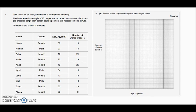It says we've got a guy, Jack, who works as an analyst for Doppel, a smartphone company. He's chosen 10 people from the company and recorded their age, and also how many words they can type into a text message in one minute. The table has all the data for us: names, genders, ages, and the number of words they can type in a minute.